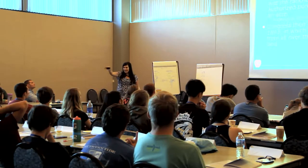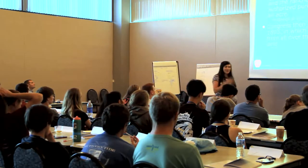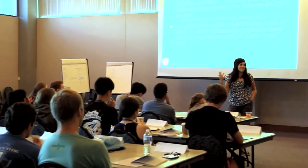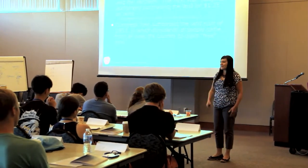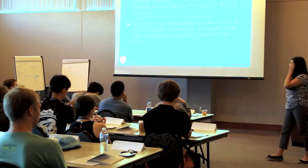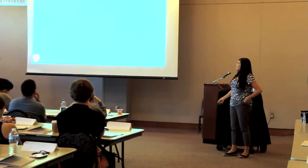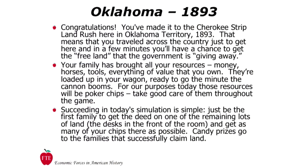Has anybody seen the movie Far and Away? If you haven't, it's one of those classic Americana movies, but it does a great job of setting up what it would be like to be at the starting point, racing for that free land — plus it has Tom Cruise and Nicole Kidman back when they were together. In this game you're going to be part of a family, and your family has spent scarce resources to travel to the starting point for a chance at free land. It's 1893 — you've traveled across the country, very excited, and brought all your valuable possessions loaded up on your wagons.